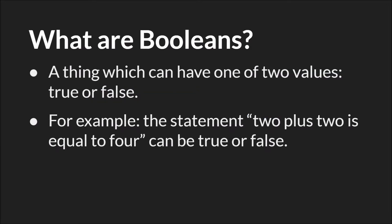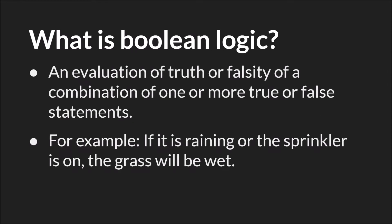So Booleans, which we covered briefly in the data types tutorial, are a thing which can have one of two values, either true or false. For example, the statement 2 plus 2 is equal to 4 can be either true or false. There's not a middle ground. Boolean logic is an evaluation of the truth or falsity of a combination of one or more true or false statements.